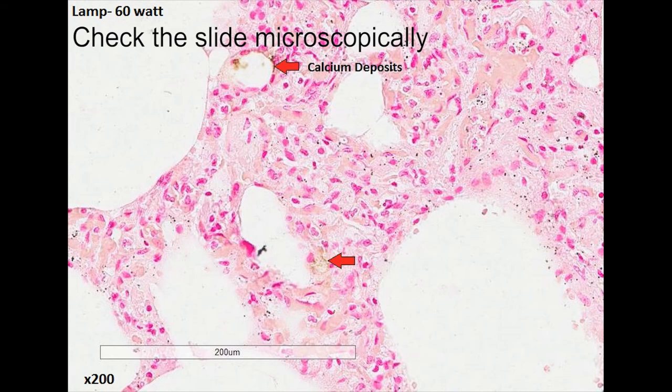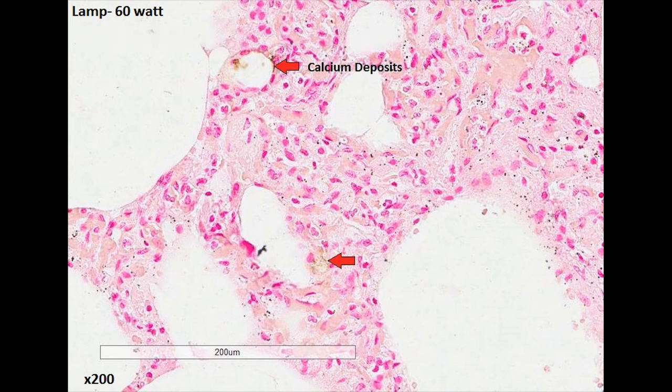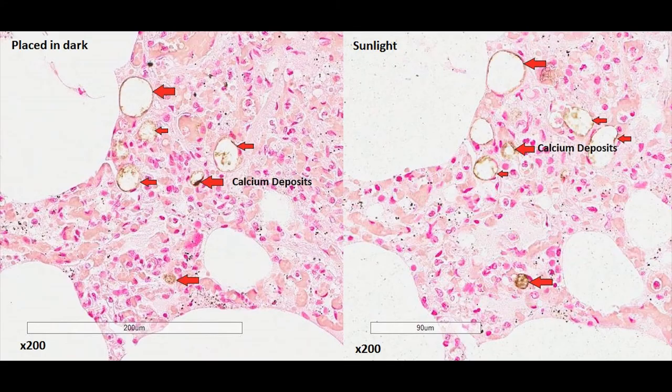This is an image taken for the section that was under the 60 watt lamp. We can see the calcium deposits presented by the brown color that are present. We can also compare the sections placed in the dark and sunlight.